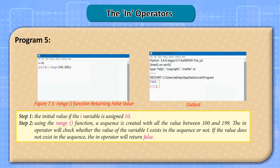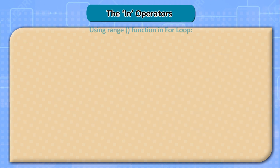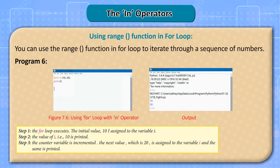Program 5. Step 1: the initial value of variable i is assigned 10. Step 2: using the range function, a sequence is created with all values between 100 and 199. The 'in' operator will check whether the value of variable i exists in the sequence or not. If the value does not exist in the sequence, the 'in' operator will return false. Using the range function in for loop — Program 6: you can use the range function in a for loop to iterate through a sequence of numbers.